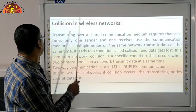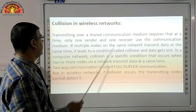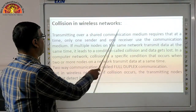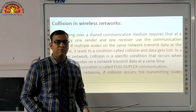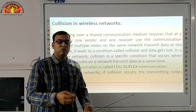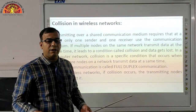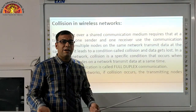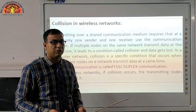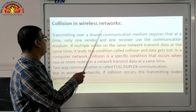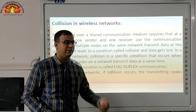Now, collision in wireless networks. Wireless network means a network established without wire. For example, suppose three mobiles are connected to each other via Bluetooth — that is what we call wireless. Whatever is connected without wire is a wireless network. Transmitting means sending your signal from one side to another. We say the signal is being transmitted.